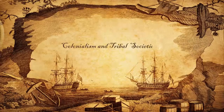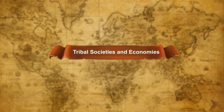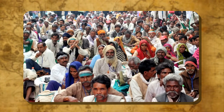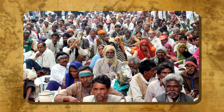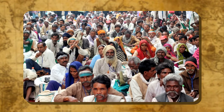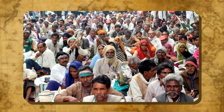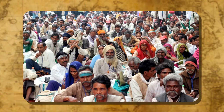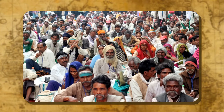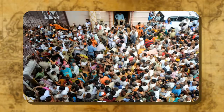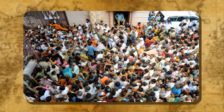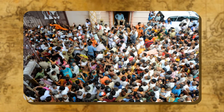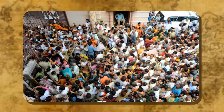Colonialism and tribal societies: India displays a very high degree of social and ethnic diversity. The population of India subsumes within it a multitude of caste and tribal groups representing different stages in the social evolution of humankind. According to the census of 2001, 84.3 million people — 8.2 percent of the total population — were registered as scheduled tribe.